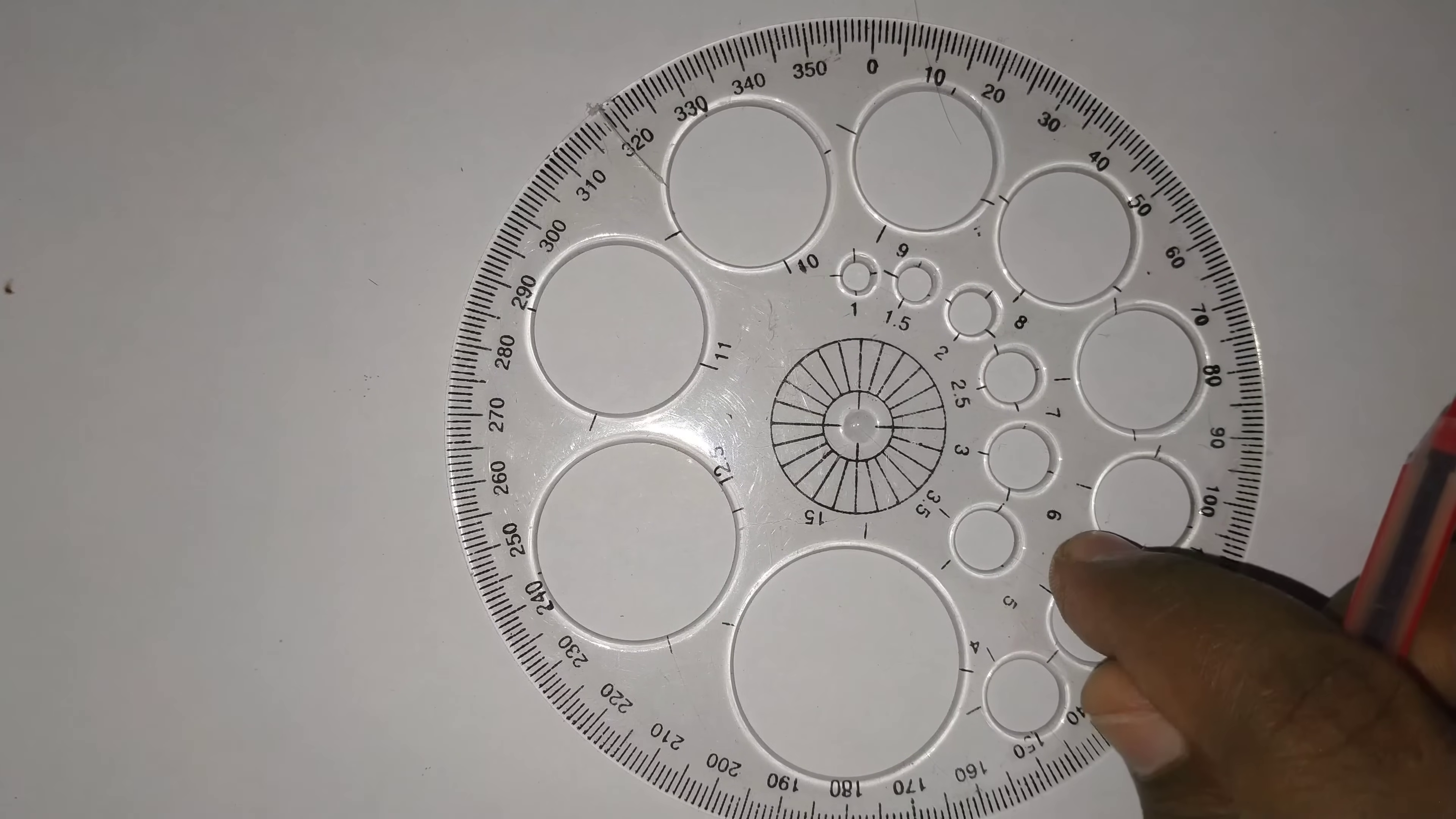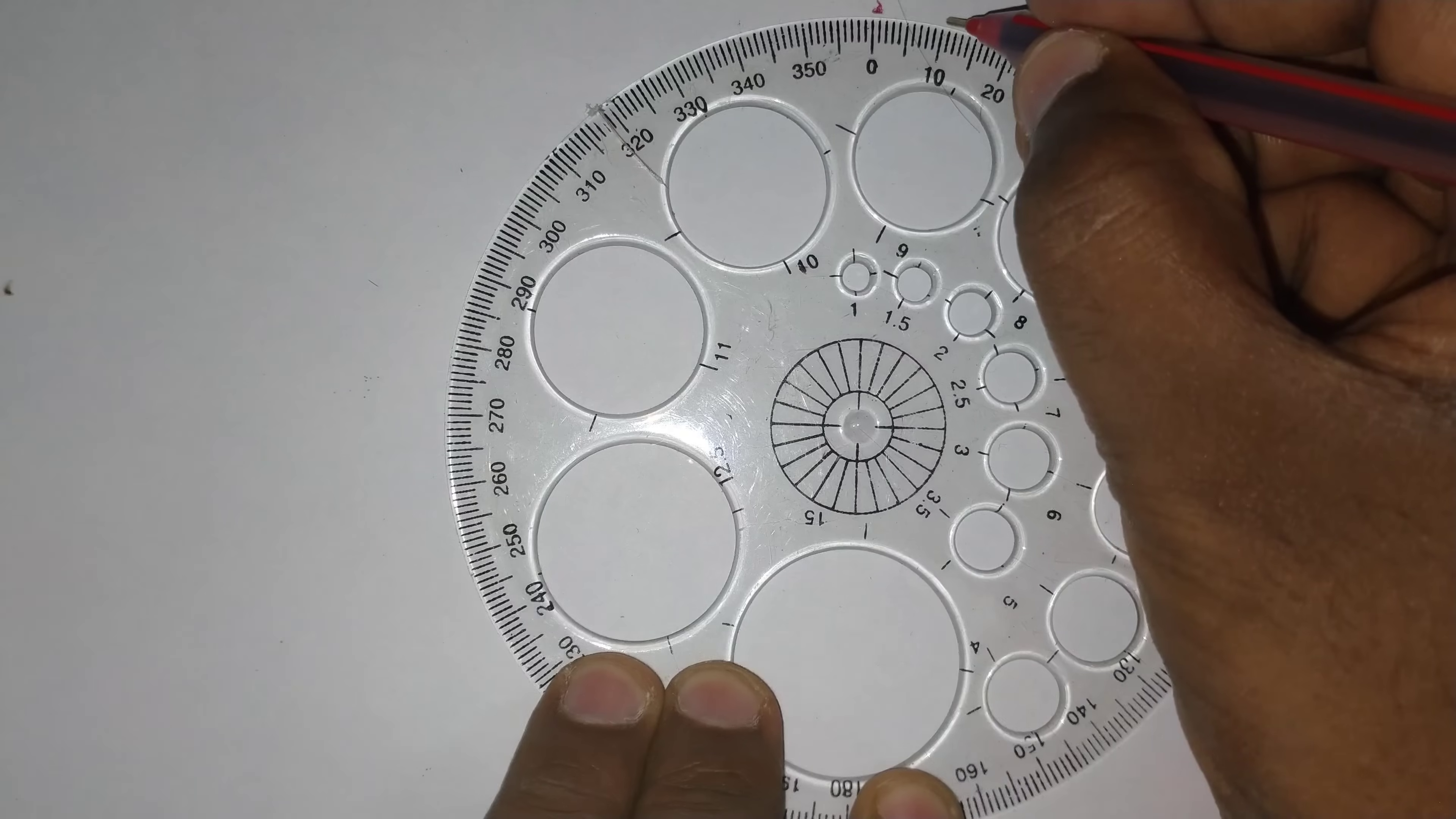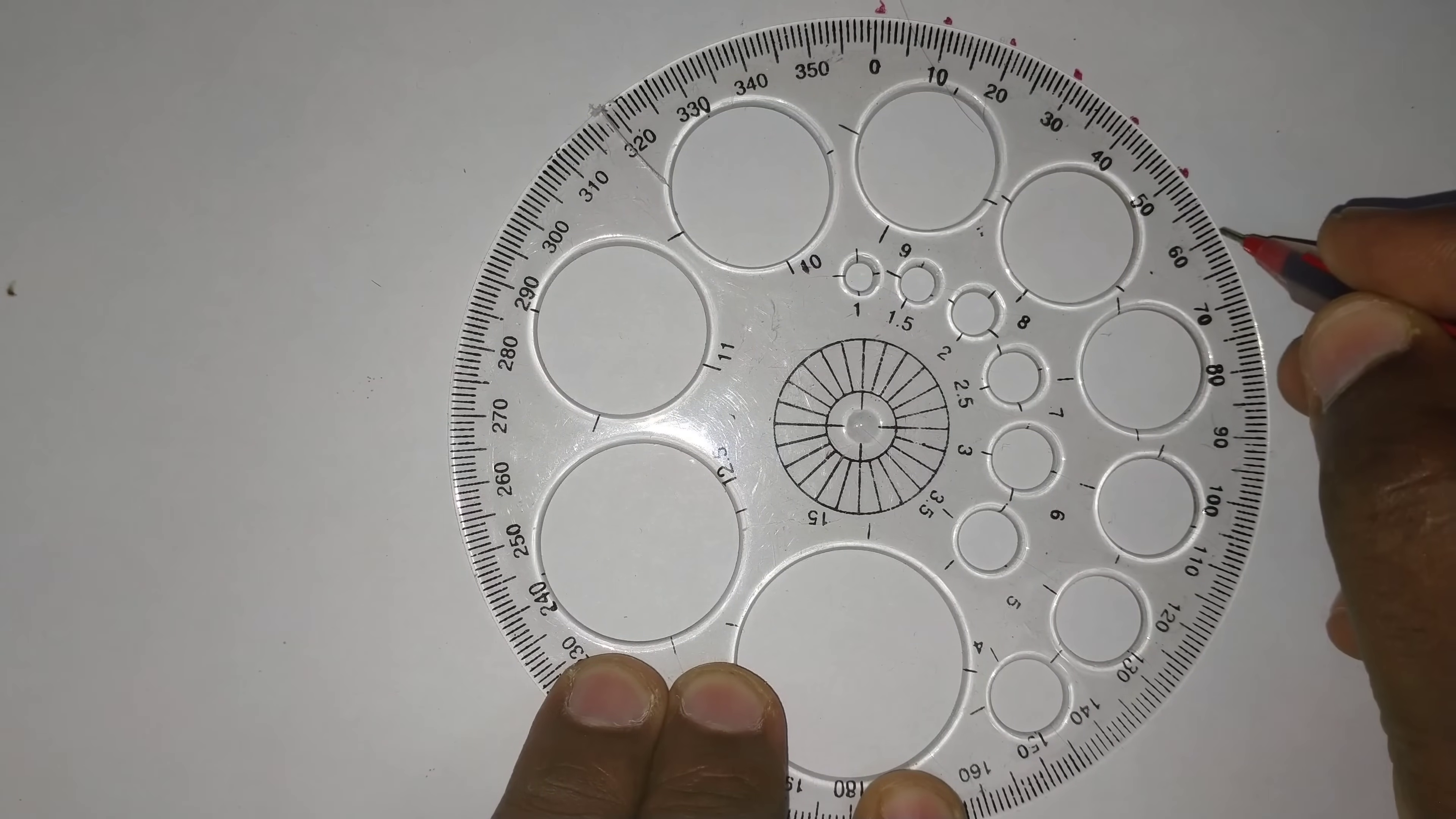In this video, let us see an activity: sin i by sin r is constant. For that, I am taking a protractor circle and I have taken a white sheet. I am marking the degrees from 0 to 360.